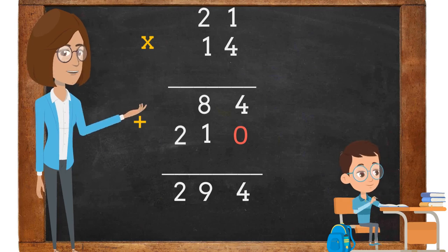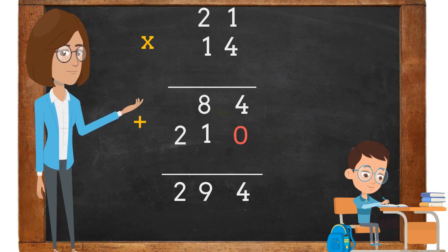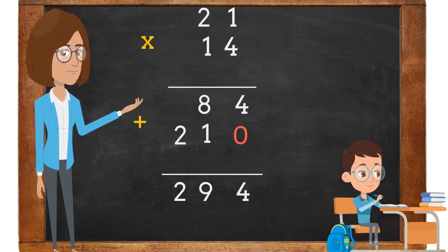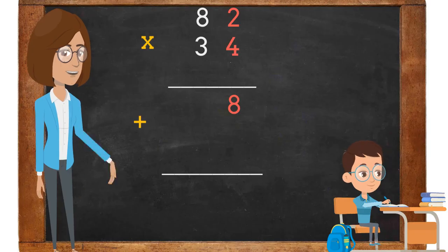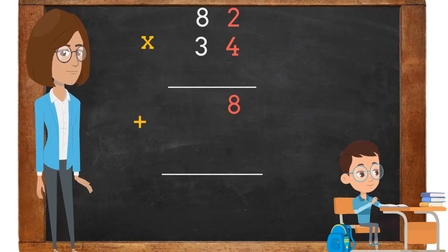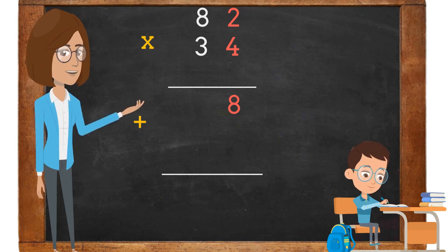Multiplication. Two digit by two digit. By the Slipose Animation TV. Let's look at this math problem: 82 times 34.